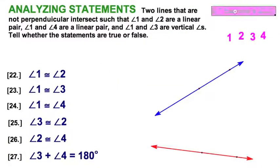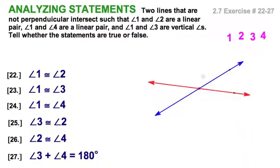Let's start with exercises 22 through 27. We have two lines that are not perpendicular. We'll take the red and the blue and make them intersect such that angle 1 and angle 2 are a linear pair. I'll make this one angle 1, and this one will be angle 2. Angle 1 and angle 4 are a linear pair, so if this is angle 1, the other linear pair must be there. And angle 1 and angle 3 are vertical. This is angle 1, so angle 3 is opposite, and there we go.